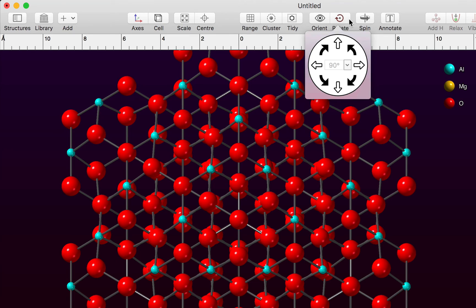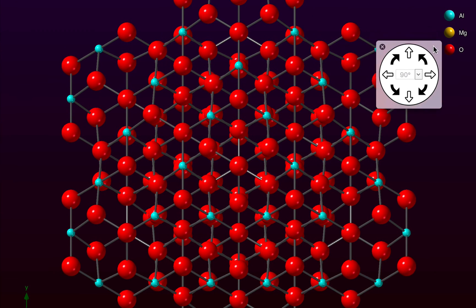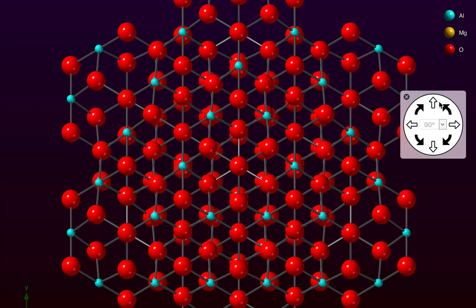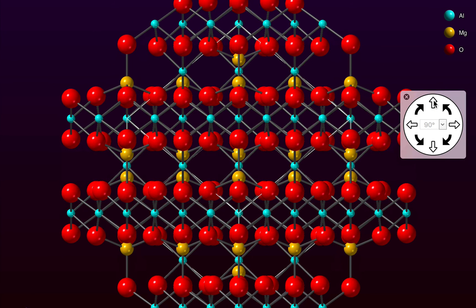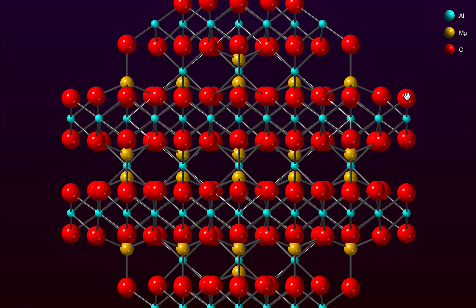Many of these popovers can be repositioned and left open — you can click and drag the popover. Let's rotate through 90 degrees; now we can see the structure sideways on. We've finished with the popover so we'll close it. Here we have our ball-and-stick model of the spinel structure, and you can see layers of oxygen atoms with metal ions in between.